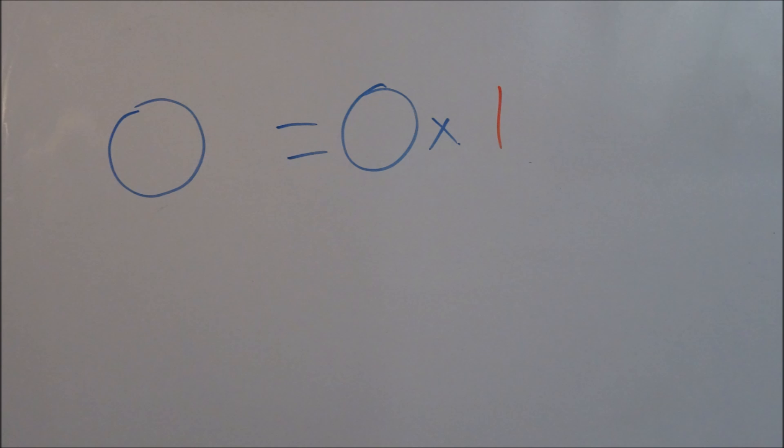In other words, 0 over 0 could be 1, or pi, or a billion, or minus 492, or 10 to the minus 20. There are infinitely many possibilities, and there's no way of determining which number was the x in the original equation, which is why it's called indeterminate.